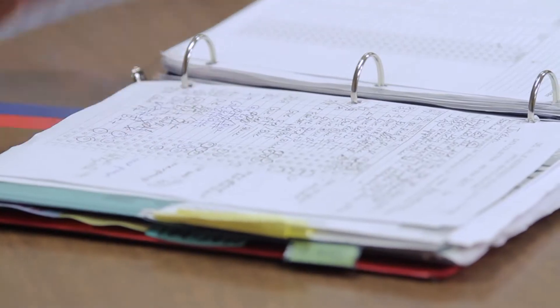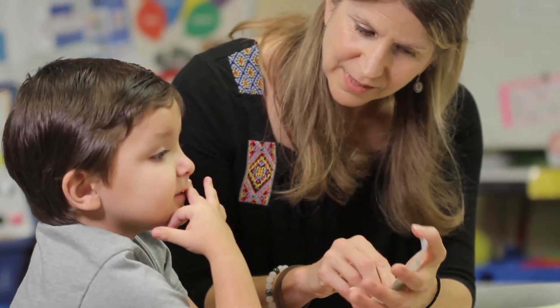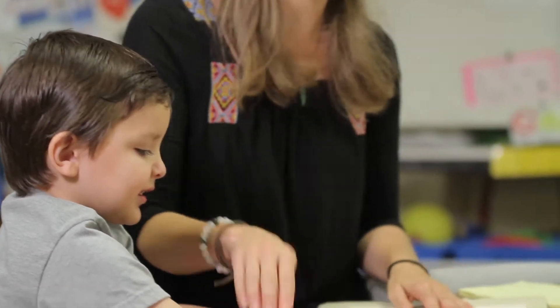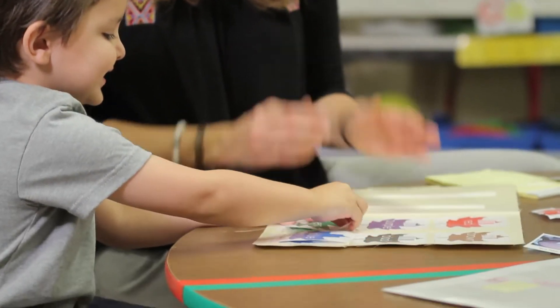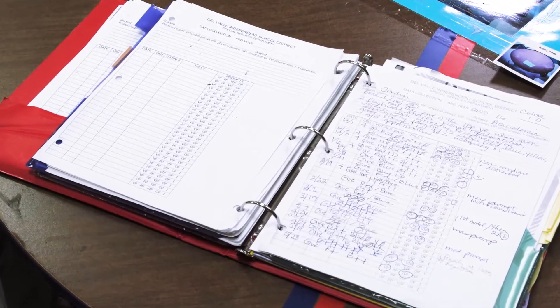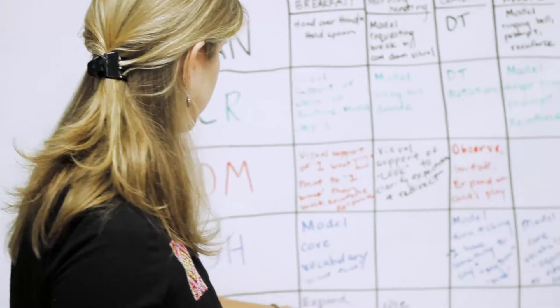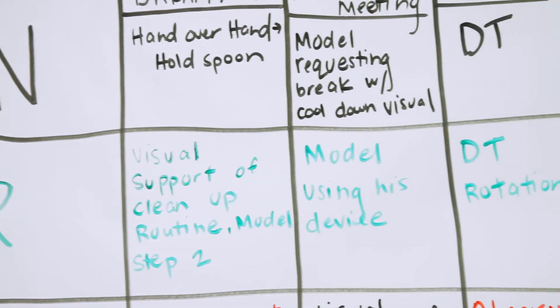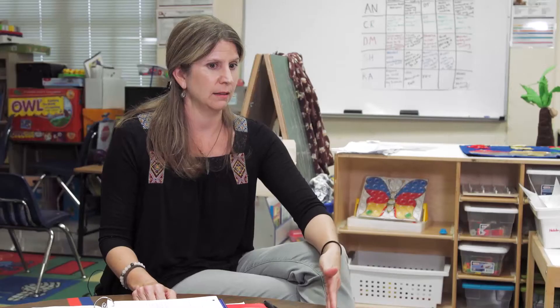Collecting data on something like pre-academic skills gives me information on behavior, gives me information on reinforcers, and all of that stuff I then get to file away and use again the next time I work with them. You have to see where they are so that you know where they're going and where you need to get them and how to help them get to the next place.